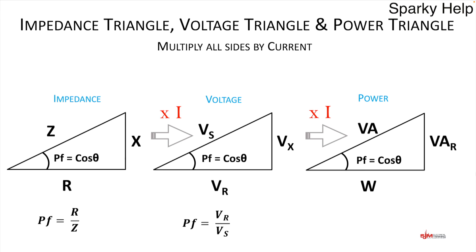We can apply that same relationship to the voltage triangle: it's VR over VS, which gives us the power factor. And the last one: watts over VA also gives the power factor. All of these formulas will give you the power factor for a circuit if you know those two values.